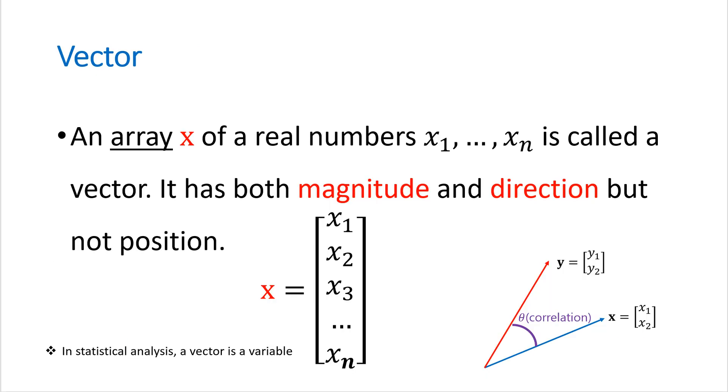All right, let's start from the fundamental part. So the first one is vector. An array x of real numbers x1 to xn is called a vector. It has both magnitude and direction, but not position.